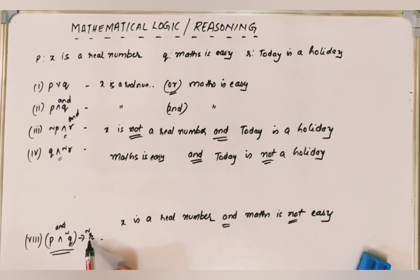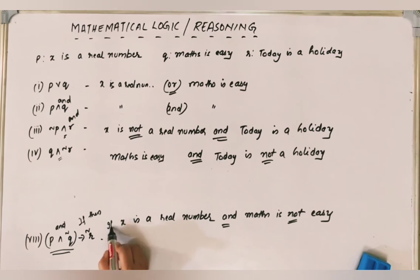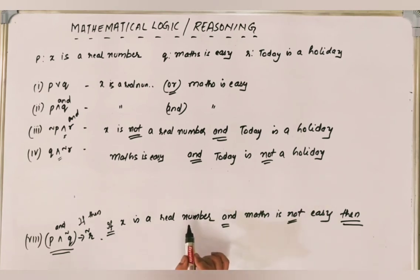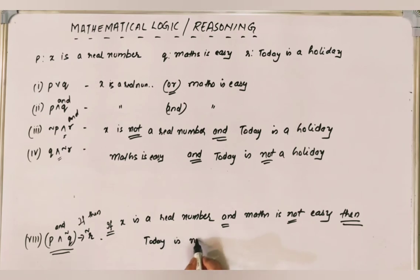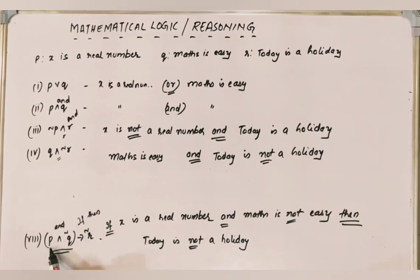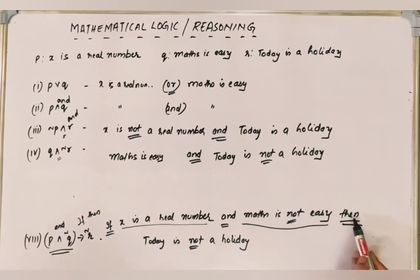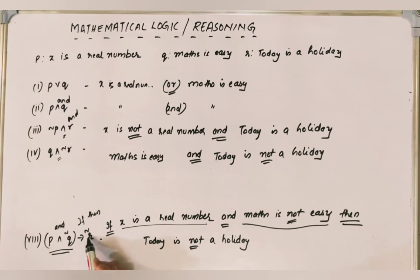For (P AND NOT Q) → NOT R: whenever there is a conditional, it means IF-THEN. So: 'If X is a real number AND maths is NOT easy, then today is NOT a holiday.' We put IF at the beginning and THEN just before the R statement, with R negated.